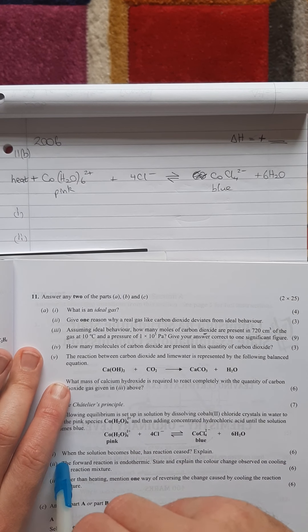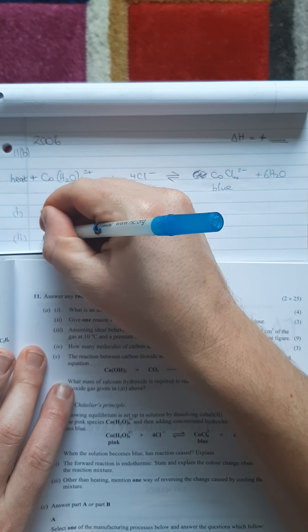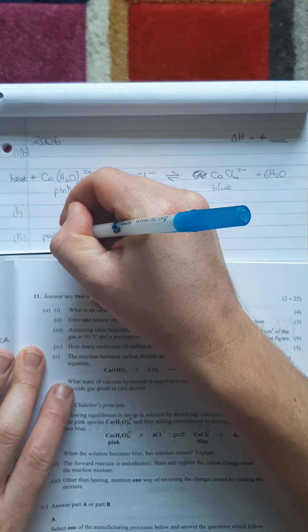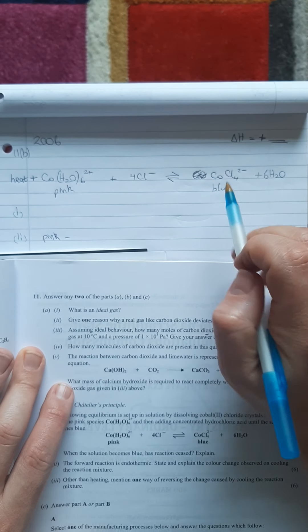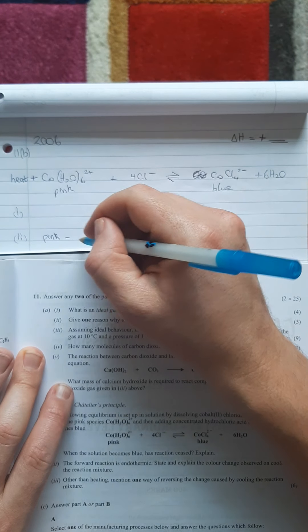If you take away heat, it's going to move backwards and go pink. So the answer for part two is that it's going to be pink, and why? Because of the stress you've applied to it. You have tried to cool it down, which is take away heat, so it's going to produce more heat to get the equilibrium going again.